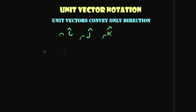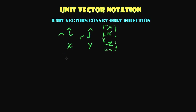The unit vector i-hat refers to the x-axis, j-hat refers to the y-axis, and k-hat refers to the z-axis. Don't be intimidated by working in three dimensions — unit vector notation makes working in three dimensions just as easy as working in two. It's a very elegant way of describing the position of your vector.